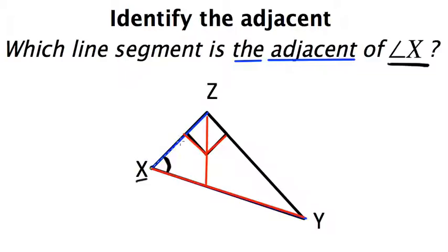So I'll put it in green. This one is the adjacent angle of x. And so I would say that line segment xz is adjacent to angle x.